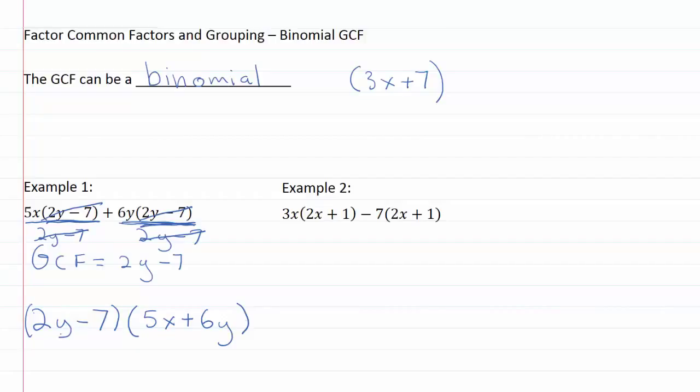So our factored form of this expression is just 2y minus 7 times 5x plus 6y. Let's take a look at another example.